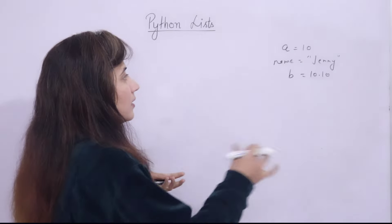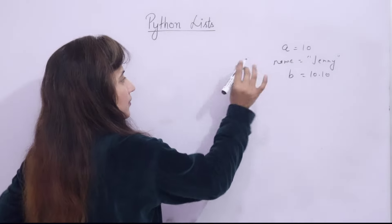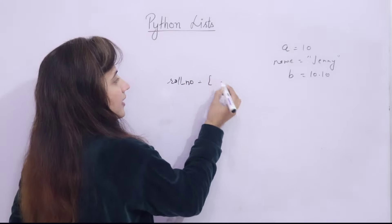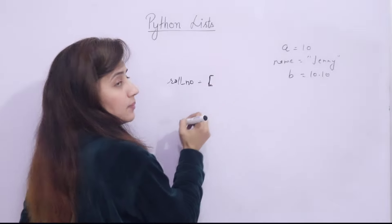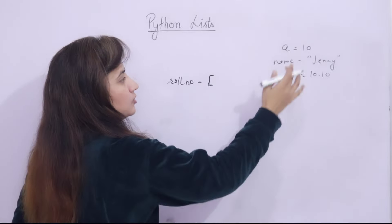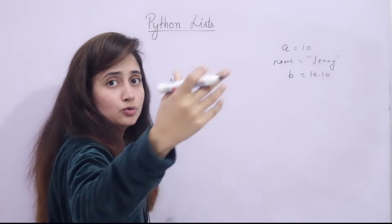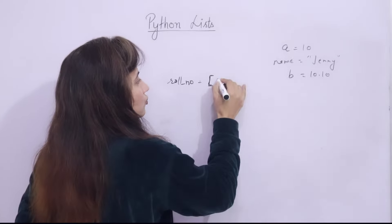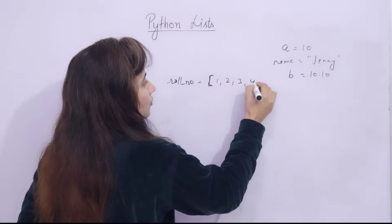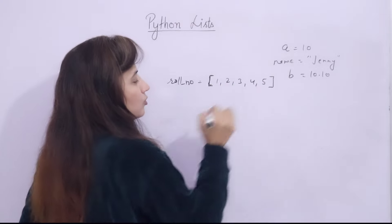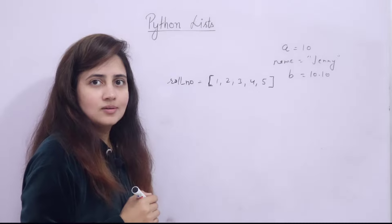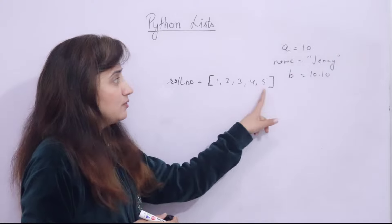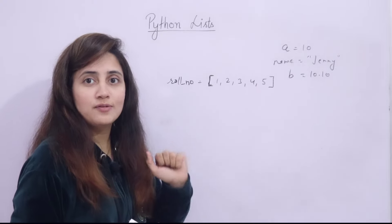So what we can do? I can create a simple variable, suppose I am taking 'row_number', and there I can store these square brackets — opening bracket — row numbers of 5, 10, or 50 or 60 students, as many students as you want. Like I am taking only 5 students: 1, 2, 3, 4, 5, and closing square bracket. That's it. So this is what a list — under a single variable name we have stored the row numbers of 5 students.